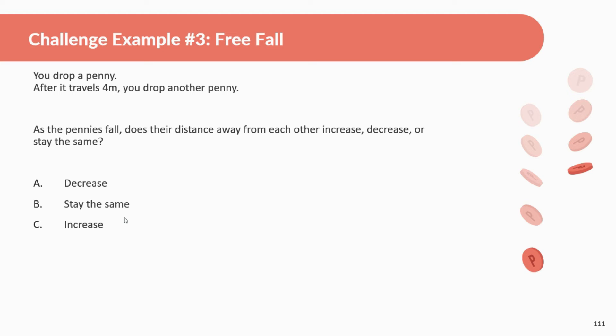Conceptual example here. You drop a penny. After it travels four meters, you drop another penny. As the pennies fall, does their distance away from each other increase, decrease, or stay the same? Pretty tricky — pretty common for people to get this wrong. A lot of times people will say it stays the same, because the acceleration of gravity is negative 10 meters per second squared throughout, and since the acceleration is the same, the distance away from each other stays the same. However, that would not be correct.